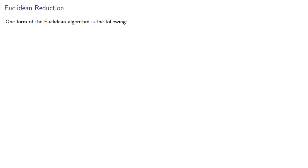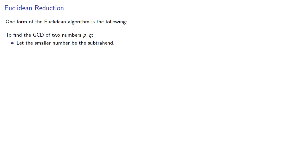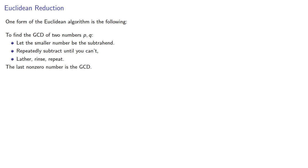One form of the Euclidean algorithm is the following: to find the greatest common divisor of two numbers P and Q, let the smaller number be the subtrahend, repeat subtraction until you can't, then lather, rinse, repeat. The last non-zero number is the greatest common divisor.